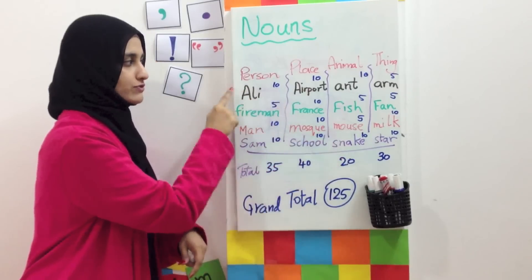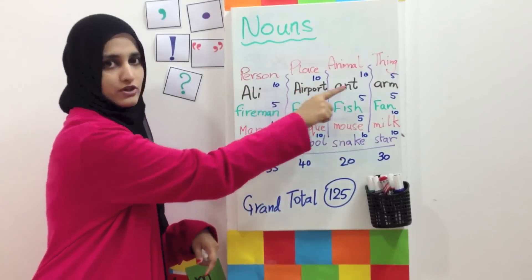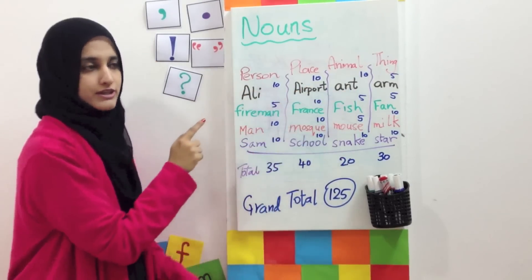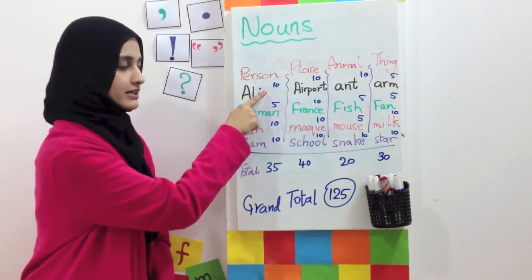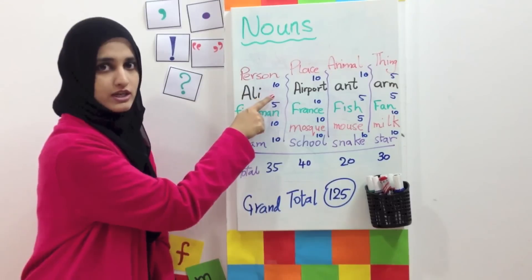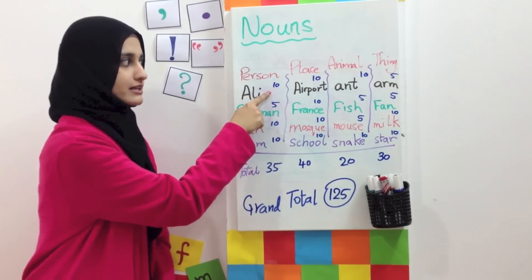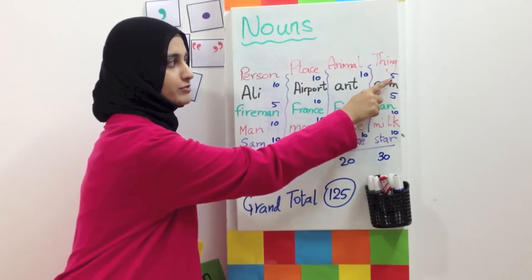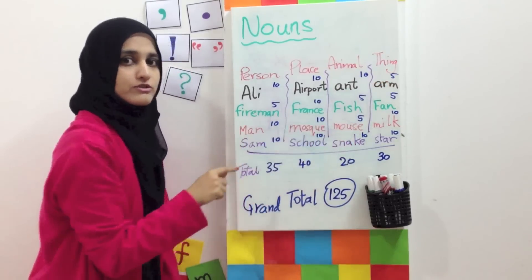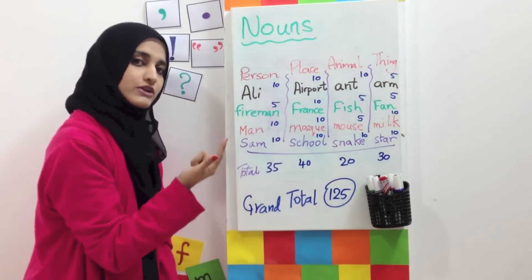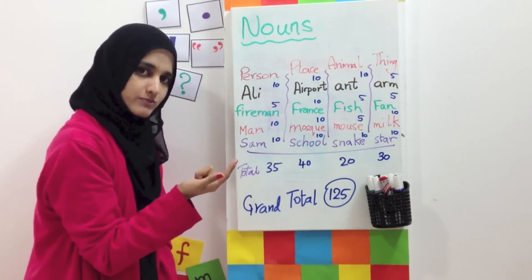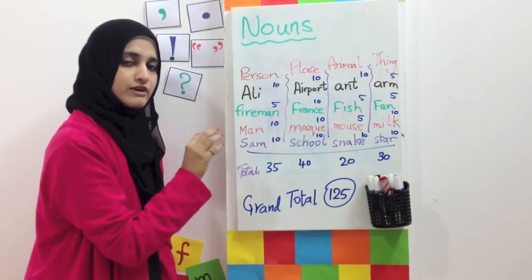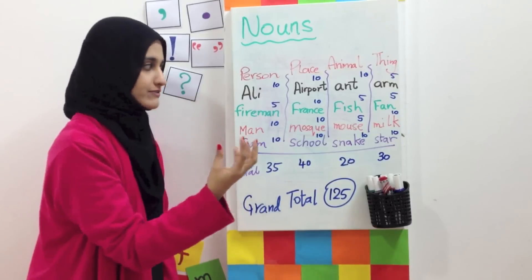You are going to give points for each of your nouns. For example, you wrote Ali and nobody else wrote Ali, so you get 10. For Arms, you are getting 5 because you wrote Arms and your friend also wrote Arms — so you are distributing the points: you have 5 and your friend gets 5.